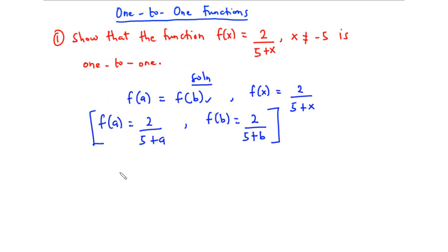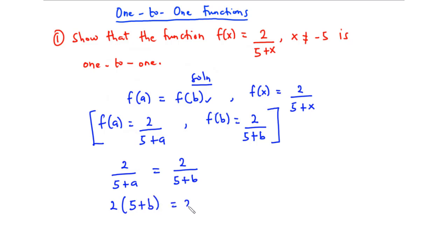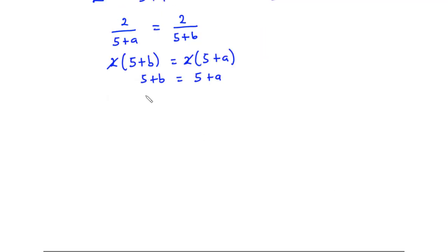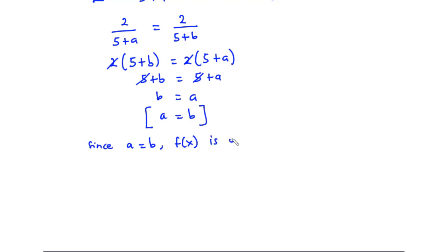Setting f(a) = f(b): 2/(5 + a) = 2/(5 + b). Cross multiplying gives 2(5 + b) = 2(5 + a). We can cancel the 2 on both sides, leaving 5 + b = 5 + a. Cancelling the 5 on both sides, we get b = a, which is the same as a = b.